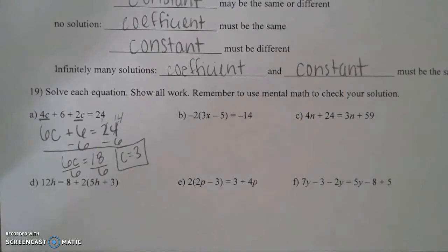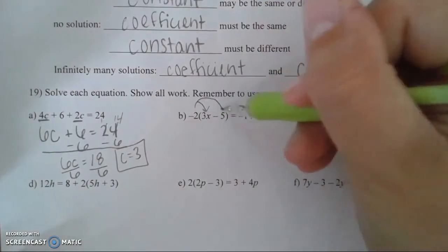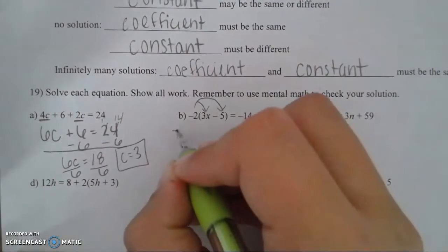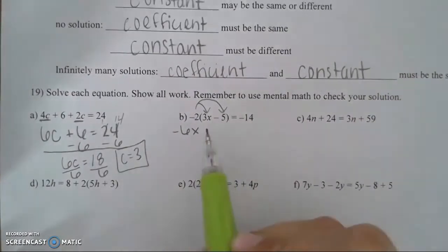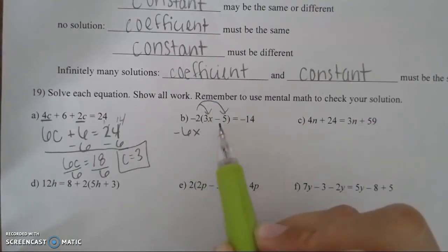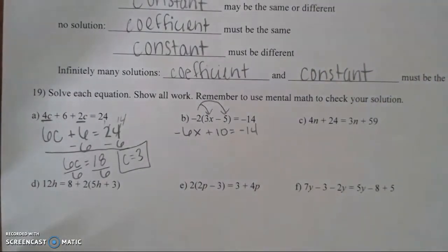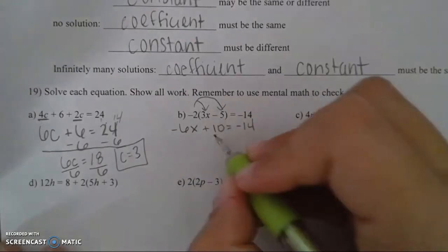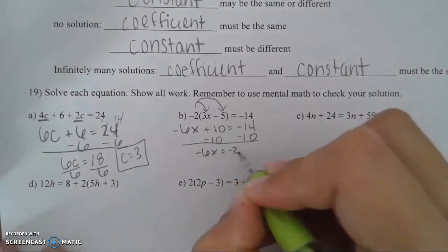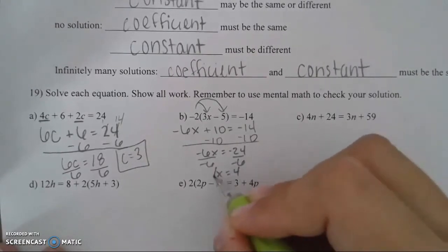For problem B, notice there are parentheses so we need to use the distributive property. Take the outside number and multiply it times everything on the inside. Negative 2 times 3x gives negative 6x. Then negative 2 times negative 5 gives positive 10. Now it's a basic two-step equation — subtract 10 on both sides to get negative 6x equals negative 24, divide both sides by negative 6, and you get x equals positive 4.